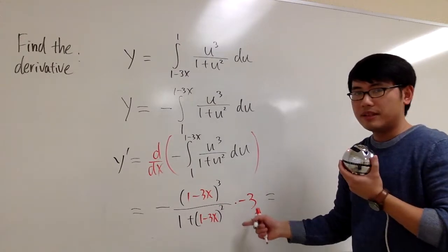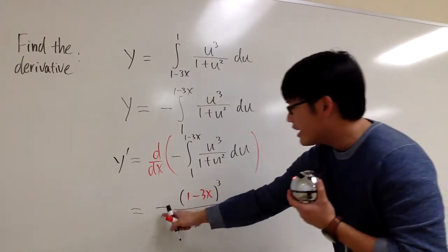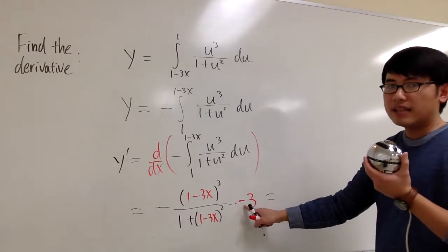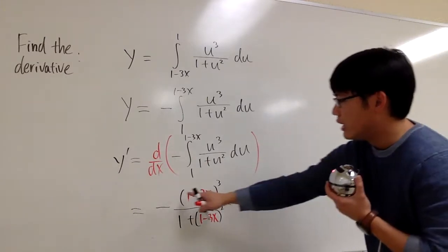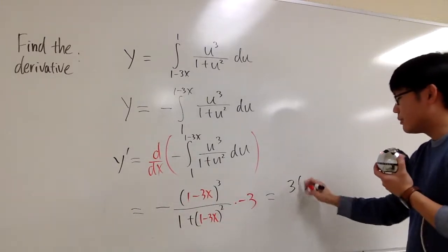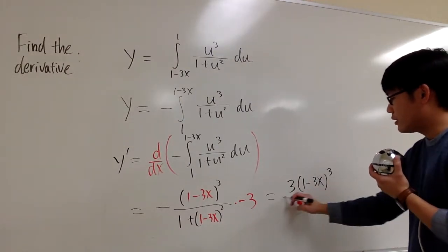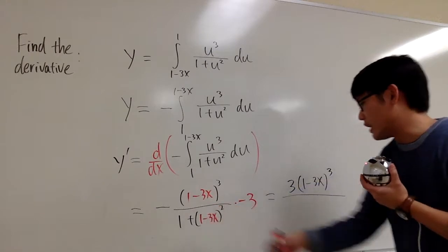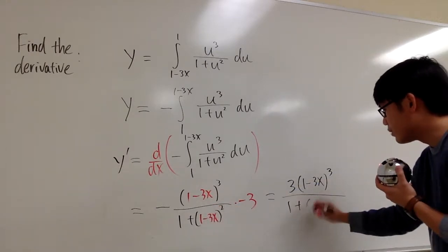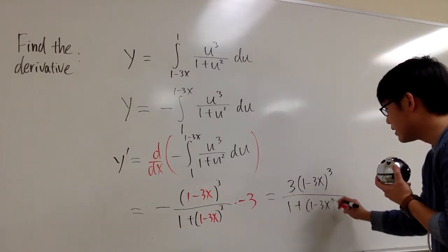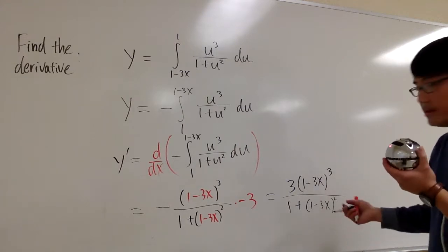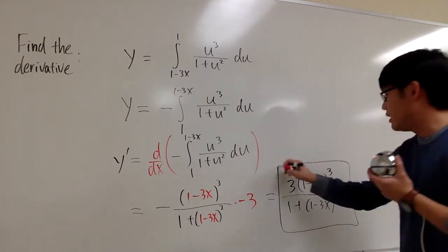And at the end, of course, we can simplify this a little bit more. Negative times negative becomes positive, and I can put a 3 on the top. So we have 3(1 minus 3x)³ over the same denominator: 1 plus (1 minus 3x)². This is how it works. This is FTC1.